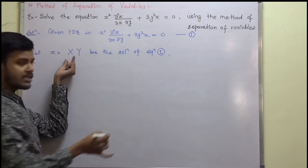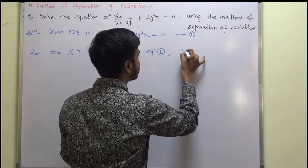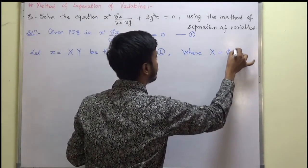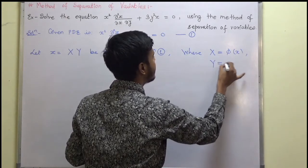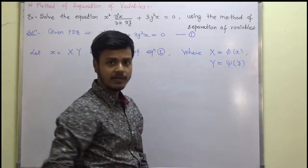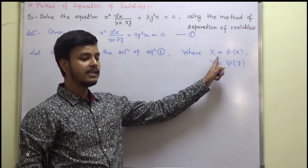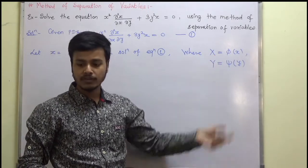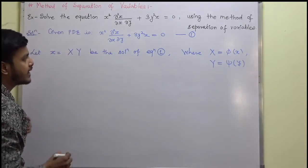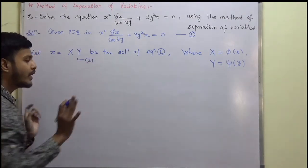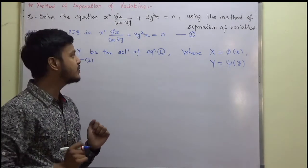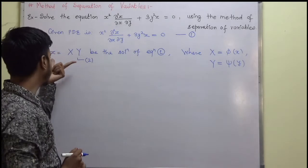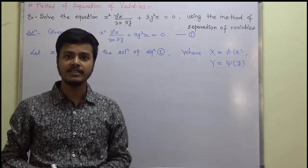Here, x and y are both independent variables. We call this equation 2. Our objective is to find the functions capital X and capital Y and substitute them into equation 2 — that would be our final solution.